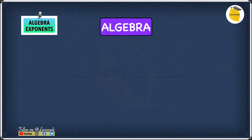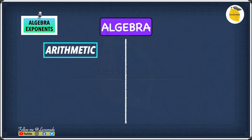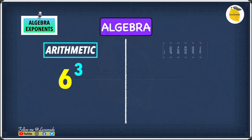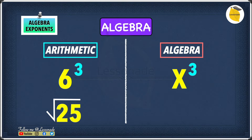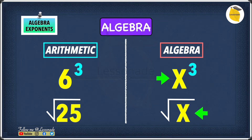We know how exponents and roots are written in arithmetic — now let's see how they are written in terms of algebra. The main difference in algebra is that it involves unknown values and variables. In arithmetic, exponents look like 6 cubed, but in algebra you would see x cubed. For roots, arithmetic uses the square root of 25, while algebra uses the square root of x.